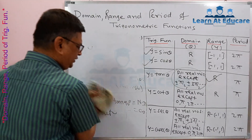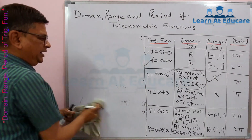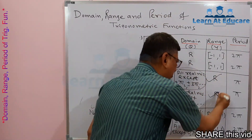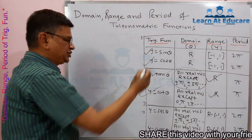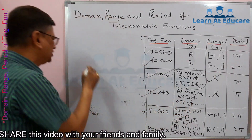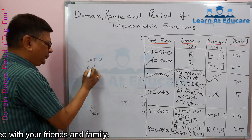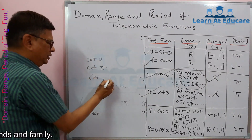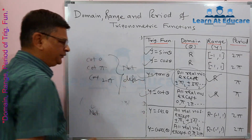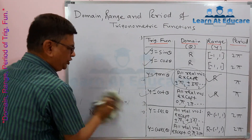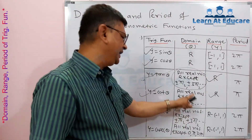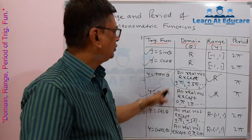For cot θ, its range is also all real numbers — it can take any real value, similar to tan θ. However, its domain is all real numbers except 0, π, 2π, because cot 0, cot π, and cot 2π are all undefined. So cot θ cannot be defined for those angles.